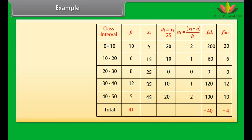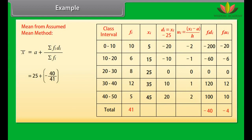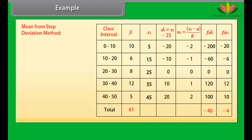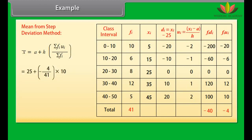Using the assumed mean method: x-bar equals 25 plus (minus 40 divided by 41), which equals 25 minus 0.98, equals 24.02. Using the step deviation method: x-bar equals 25 plus 10 multiplied by (minus 4 divided by 41), which equals 25 minus 0.98, equals 24.02. Both methods give the same result.